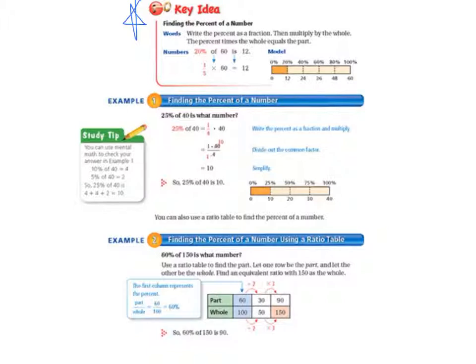So in numbers, that looks like this example: 20% of 60 is 12. So 20% can be written as a fraction, one-fifth. Remember that 'of' is times and 60 is the whole number. And that equals 12. So here's a model to show you how that looks.